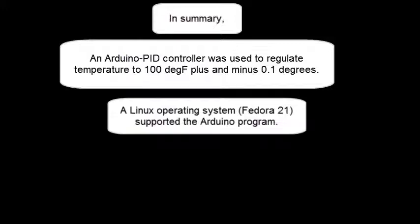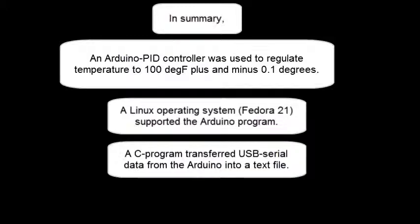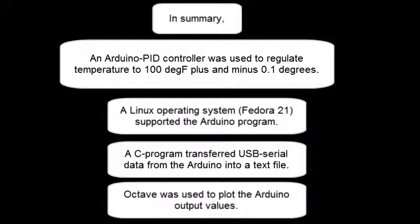In summary, an analog PID controller was used to regulate temperature to 100 degrees plus and minus 0.1 degrees. A Linux operating system with Fedora 21 supported the Arduino program. The C program transferred USB serial data from the Arduino into a text file. Octave was used to plot the Arduino output values.